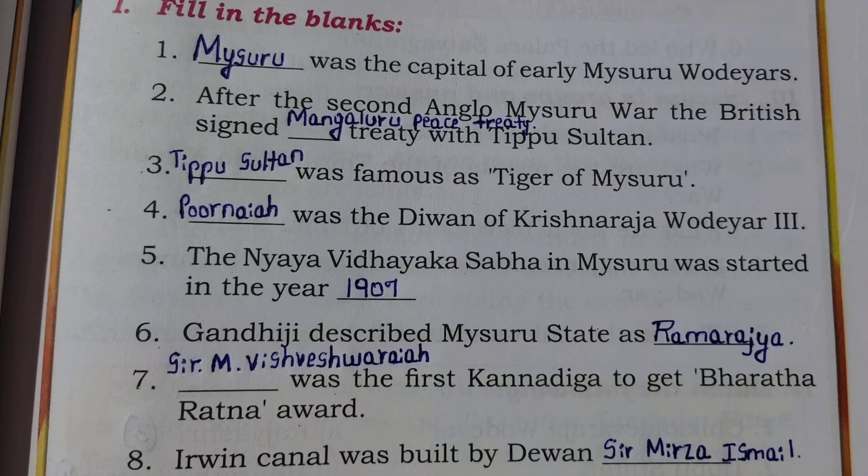Fifth question: The Nyaya Vidhayaka Sabha in Mysore was started in the year 1907. Sixth question: Gandhiji described Mysore State as Ram Rajya. Seventh question: Sir M. Vishweshwarya was the first Kannadiga to get the Bharat Ratna award. Eighth question: Irvind Kanala was built by Dewan Sir Mirza Ismail.